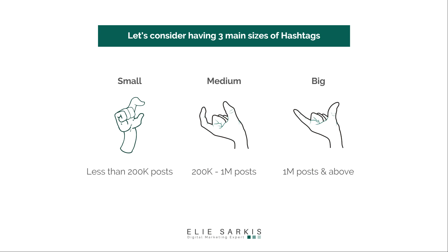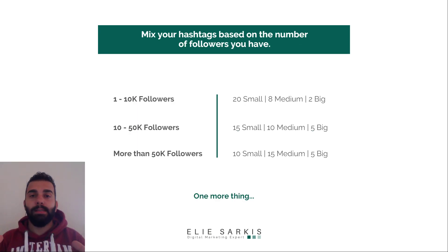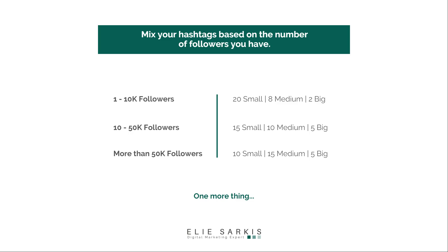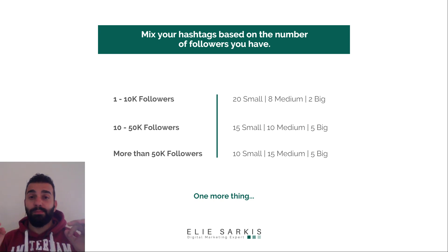What's the relation between the size of the hashtag and the number of followers we have? Based on my experience, you should change the hashtags based on your follower count. If you have 1 to 10 thousand followers, use 20 small, 80 medium, and 2 big hashtags. With 10 to 50 thousand followers, use 15 small, 10 medium, and 5 big. With more than 50 thousand followers, use 10 small, 15 medium, and 5 big hashtags.